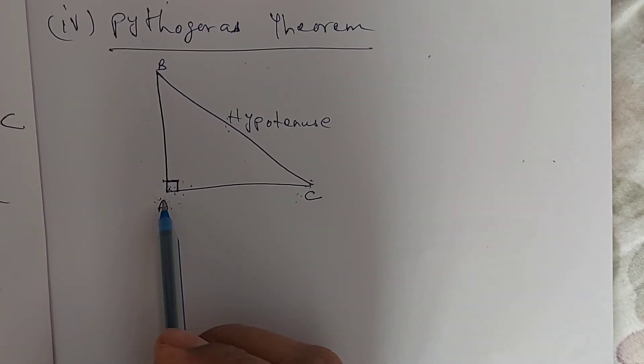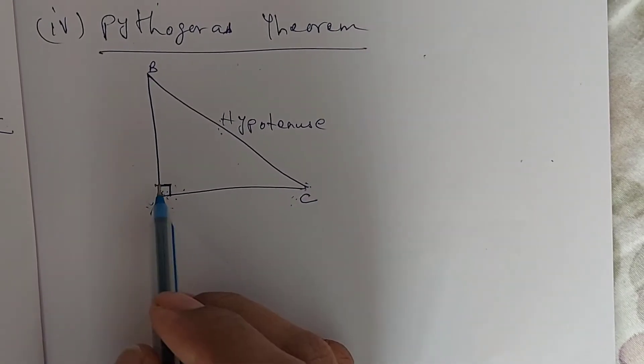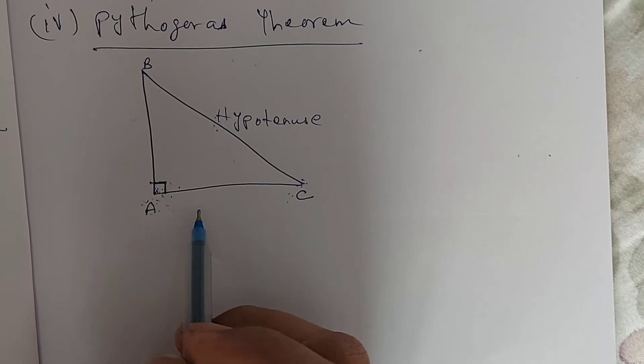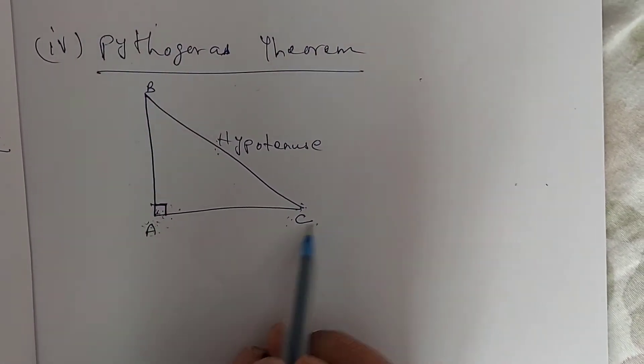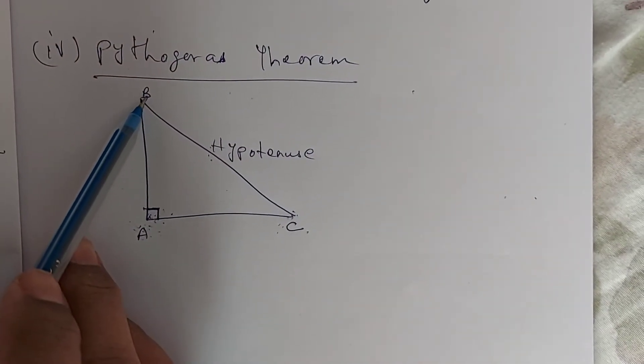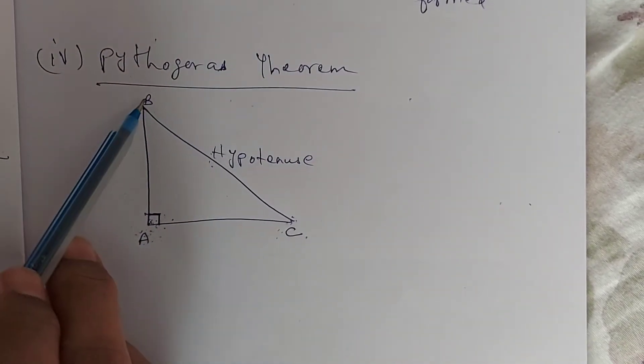And the other sides, AB and AC are known as legs, legs of the triangle ABC or sides of the triangle ABC. AC and AB are the legs of the triangle and the lengthier side which is known as hypotenuse is here.